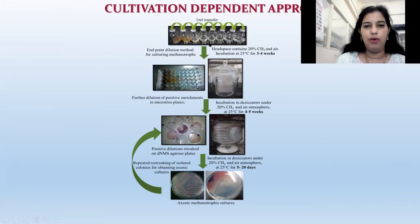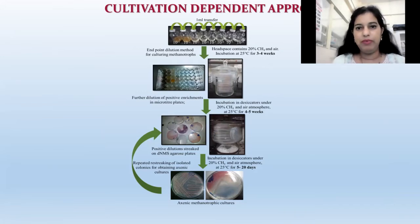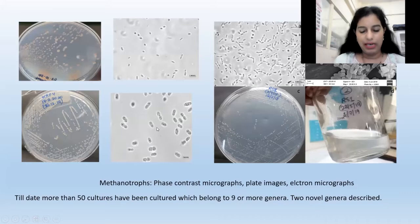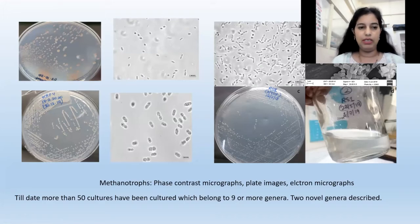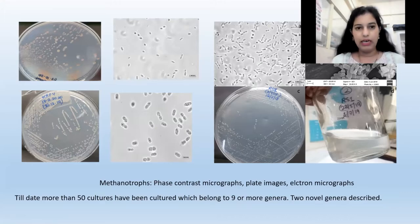What we do is enrichment of methanotrophs. We do a serial dilution where we give a chance to very slow growers which are dominant. Then we apply a second enrichment step with further dilutions and plating on agar plates. Here you can see beautiful shapes of these methanotrophs — some are very big, like 5 microns. Until now, we have cultured more than 50 methanotrophs belonging to 9 different genera. India is one of the first or only culture collections having methane oxidizing bacteria from so many different genera, and in general, there are no methanotrophs cultivated in India in other labs.